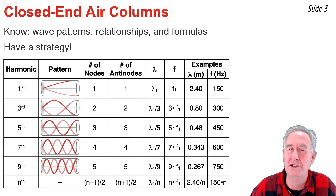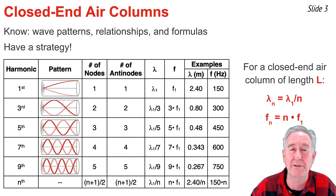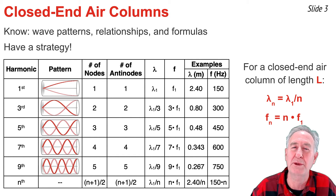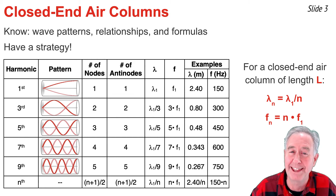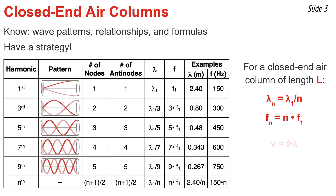To summarize the relationships for closed-end air columns of length L: the wavelength of the nth harmonic is the wavelength of the first divided by n; the frequency of the nth harmonic is the frequency of the first multiplied by n; the speed of waves equals frequency times wavelength; and the wavelength of any harmonic is simply 4 divided by the harmonic number, multiplied by the length of the air column.